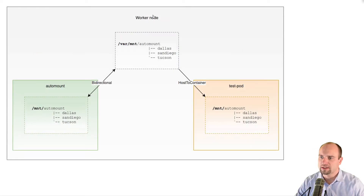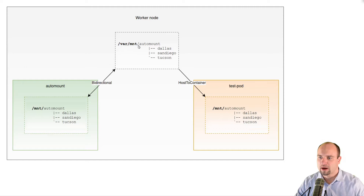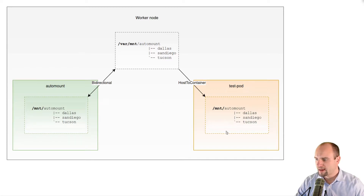This diagram shows the detail of the worker node including the two pods running on top of it: the automount pod and the test pod. It also depicts how the host path volumes work. The host path volume attached to the automount pod mounts the /var/mount directory from the worker node into the container at mount point /mount. Similarly, the host path volume attached to the test pod also mounts the /var/mount directory from the worker node into the test pod container at mount point /mount.